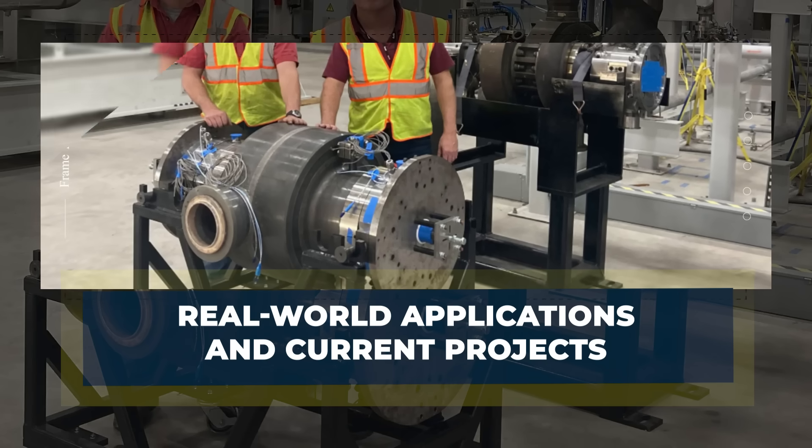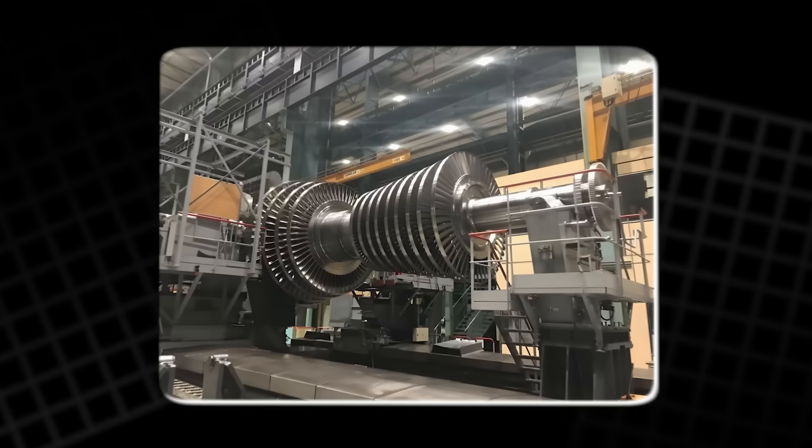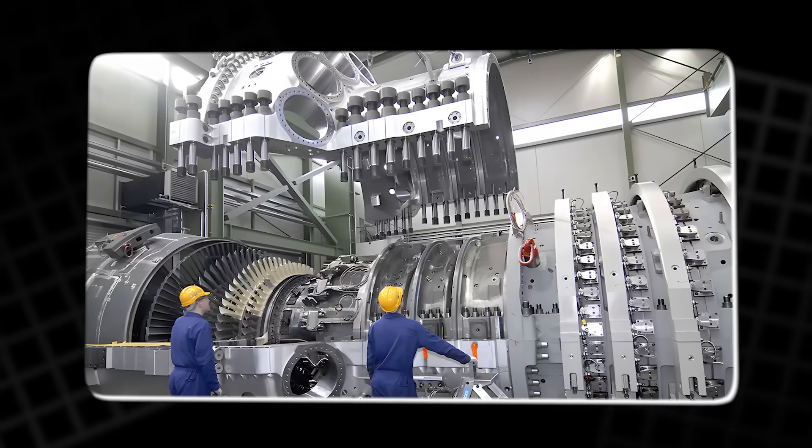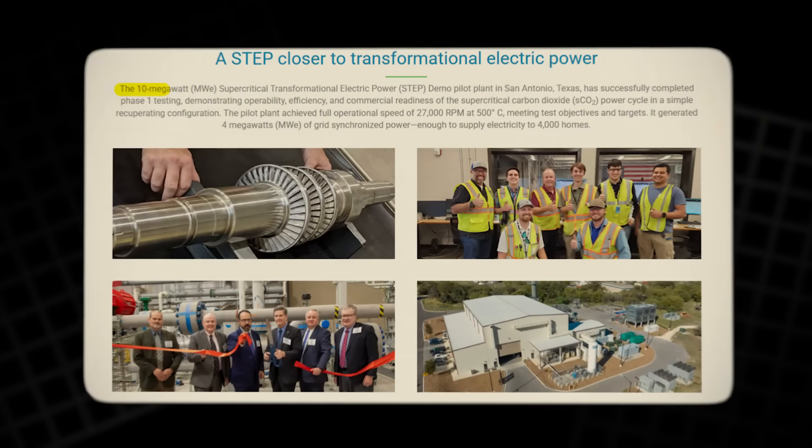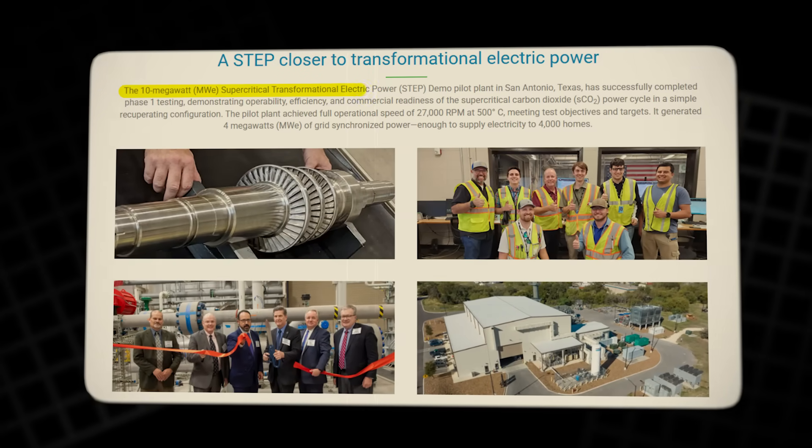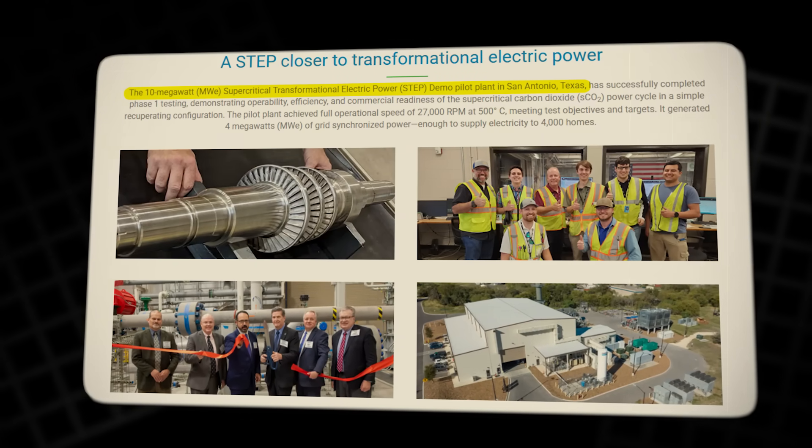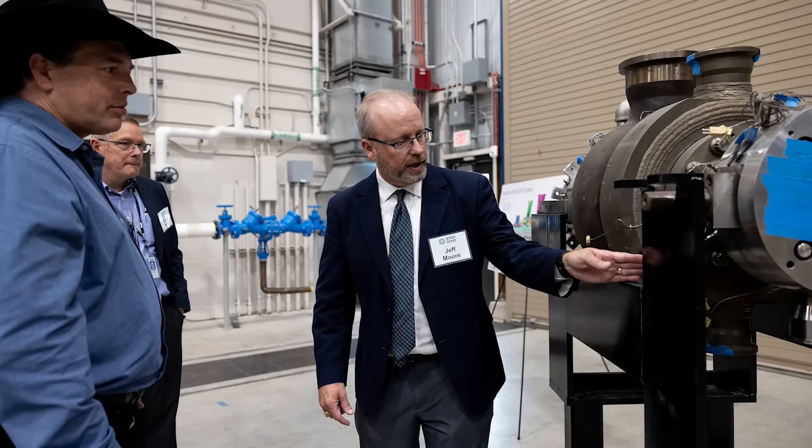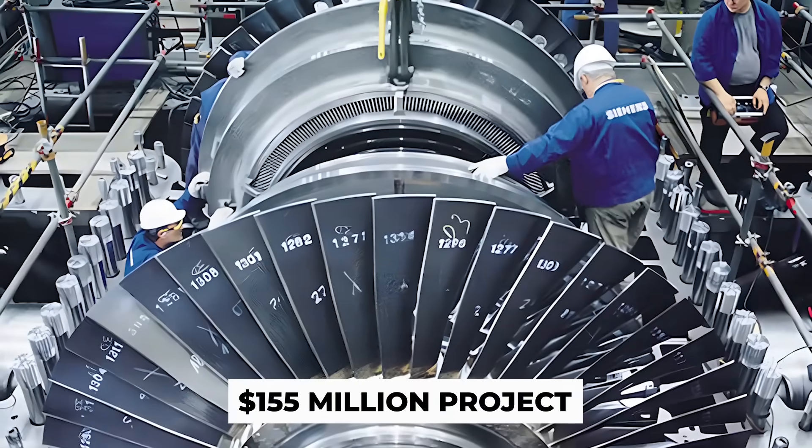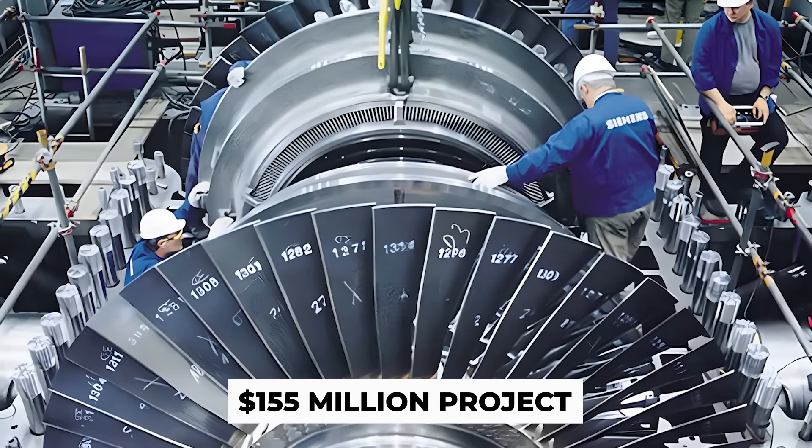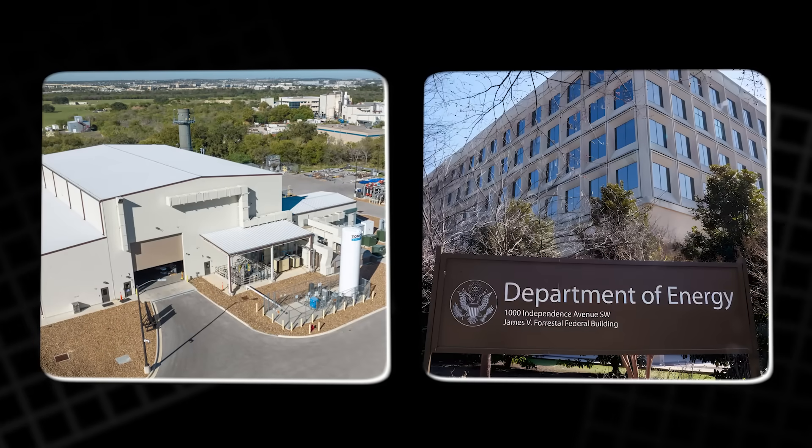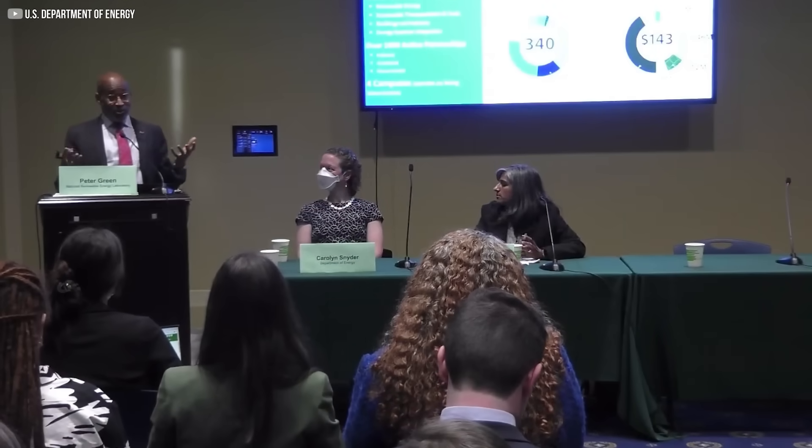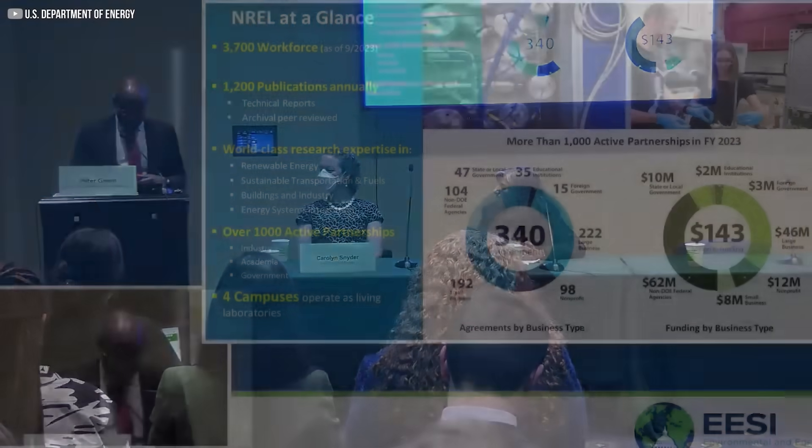Real-world Applications and Current Projects. The potential of supercritical CO2 turbines is not just theoretical. Real-world applications are already in progress. One of the most notable projects is the STEP-DEMO, Supercritical Transformational Electric Power, pilot plant in Texas, which aims to demonstrate the commercial viability of this technology. This $155 million project, a collaboration between General Electric, Southwest Research Institute, and the U.S. Department of Energy, reached a significant milestone in 2023 with mechanical completion.